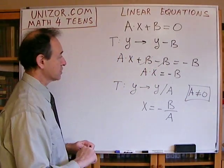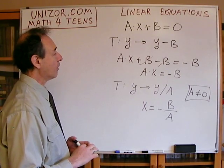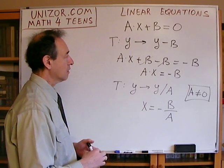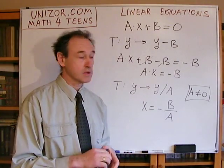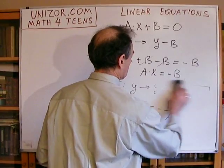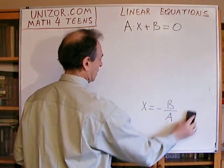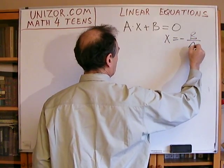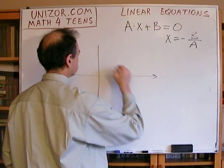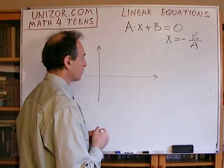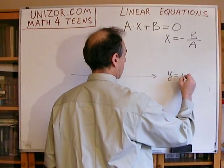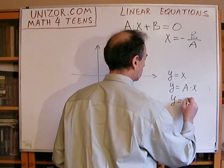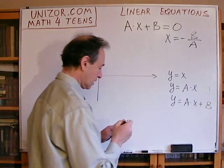So everything is fine in this particular case. Our next job is to represent this equation and its solution geometrically using coordinate axes. Let me write down the solution: x is equal to minus b over a. Now let's go to graphical representation. We'll start with y equals x, then go to y equals ax, and then to ax plus b. These are the three steps we are going to take.